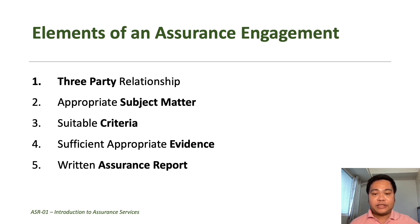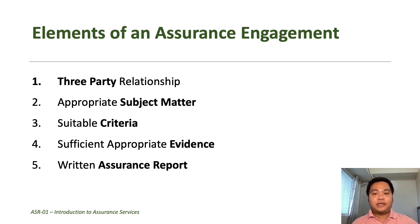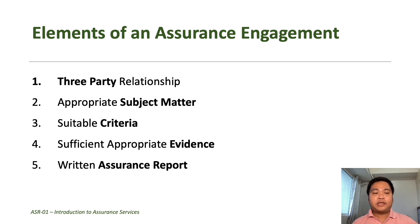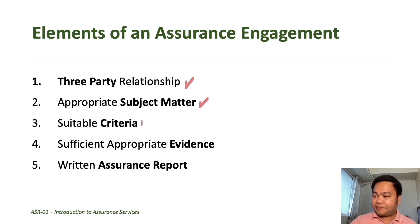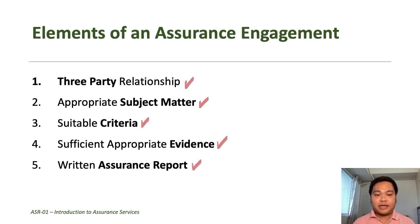Next, we will discuss the elements of an assurance engagement. All five of these elements must be present in an engagement for it to be classified as an assurance engagement. In the absence of one or more of these essential elements, the engagement becomes a non-assurance engagement. The five essential elements are: number one, the three-party relationship; number two, appropriate subject matter; number three, suitable criteria; number four, sufficient appropriate evidence; and number five, a written assurance report. Each element will be discussed in detail in the sections that follow.